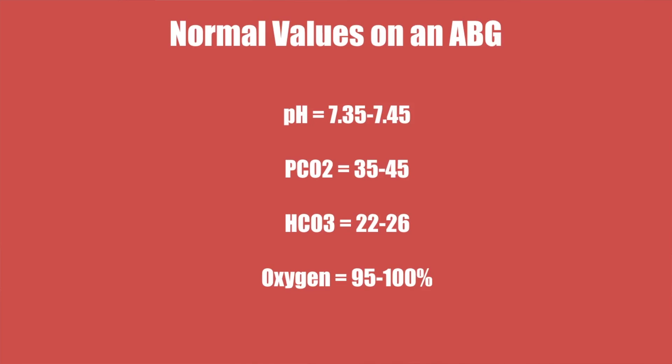So let's go over the normal ranges for these levels that you're going to see on the ABG. pH levels are 7.35 to 7.45. The CO2, which is representative of the respiratory function, is 35 to 45. And then your bicarb, which is HCO3, is 22 to 26, and that determines the metabolic state in the body. We're going to go over that more in detail in a second.